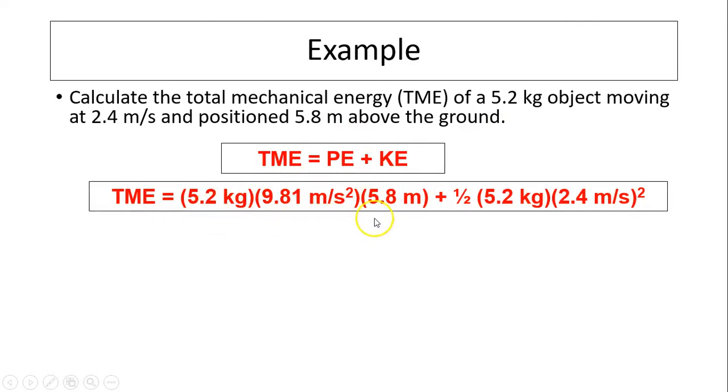Then this is gravitational potential MGH delta H plus kinetic, one-half mV squared. And your answer should be 311 joules.